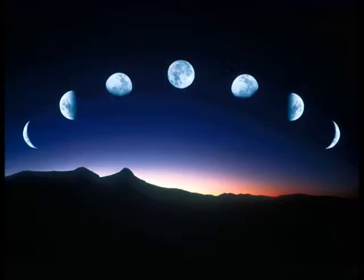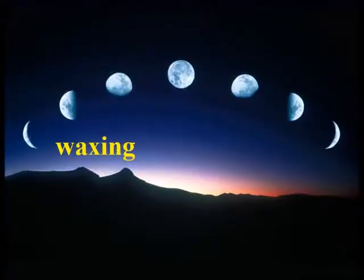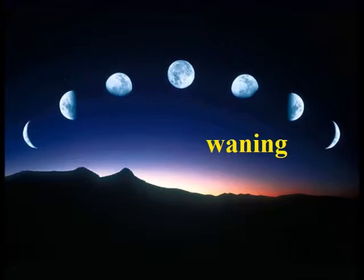Towards the beginning of the cycle, the lit part of the moon that we see starts off small. It then grows to be a full moon and gets smaller again until it can't be seen. Eight phases make up the lunar cycle and each phase is named after its size. As the moon grows bigger it's said to be waxing, and as it gets smaller it's said to be waning.